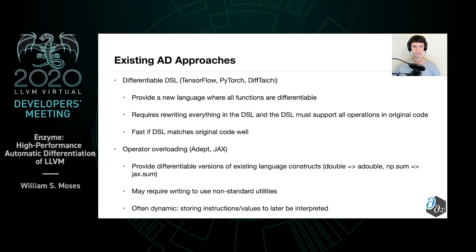These tools tend to lie in one of three different categories. The first is to create a new differentiable domain-specific language where all functions are differentiable. This requires writing the entire codebase in the DSL, and the DSL must support all operations made in the original code. This can be fast, however, if the DSL matches the original code quite well.